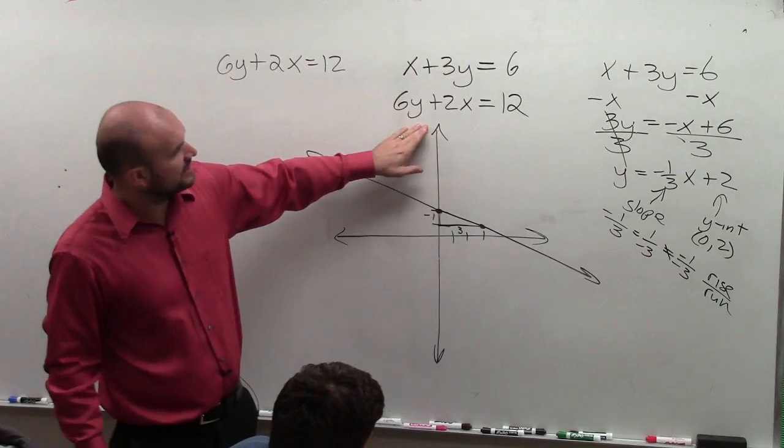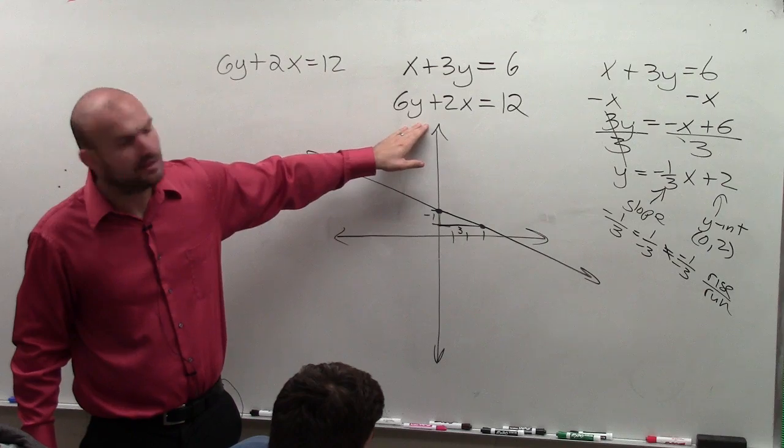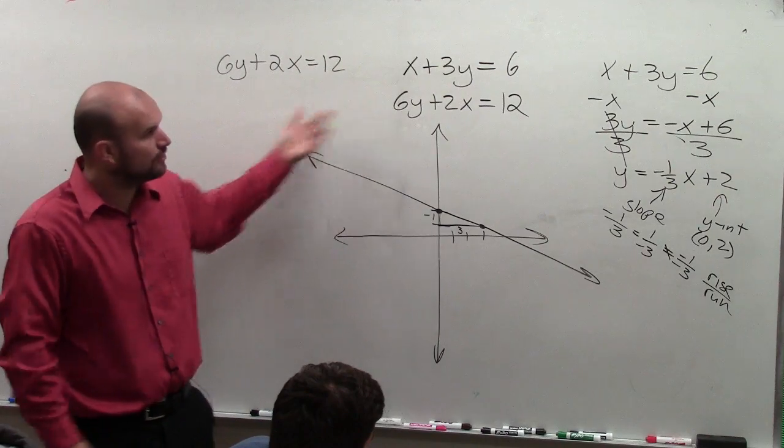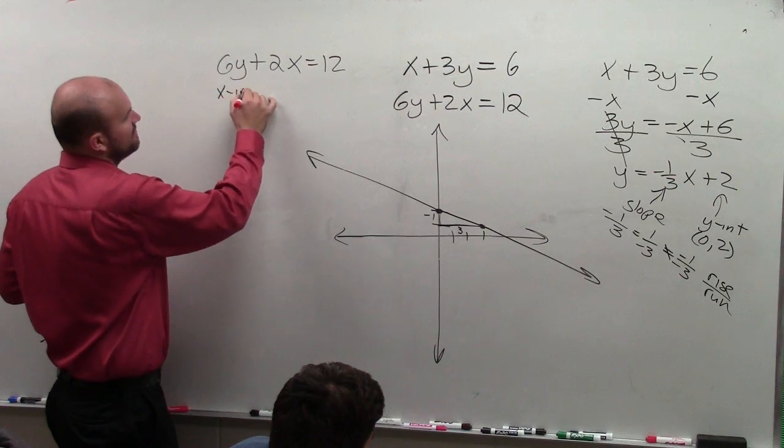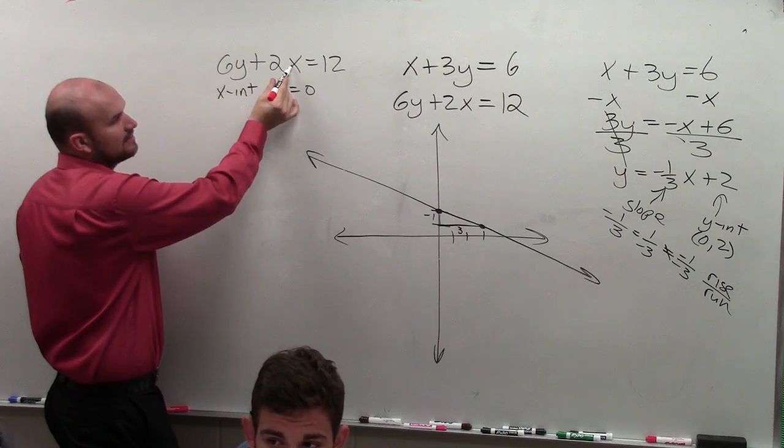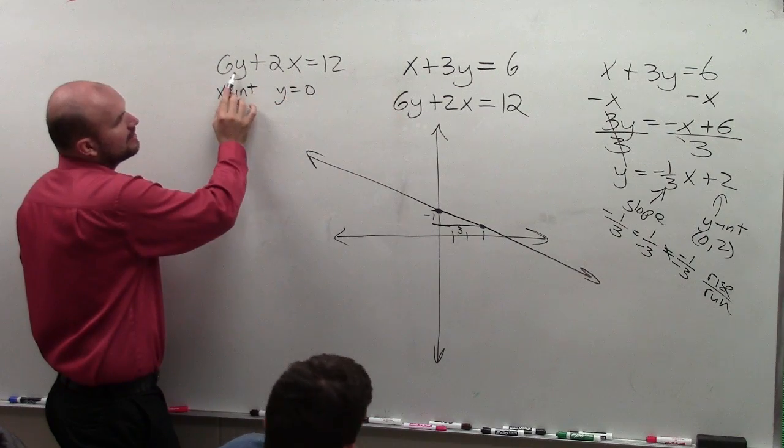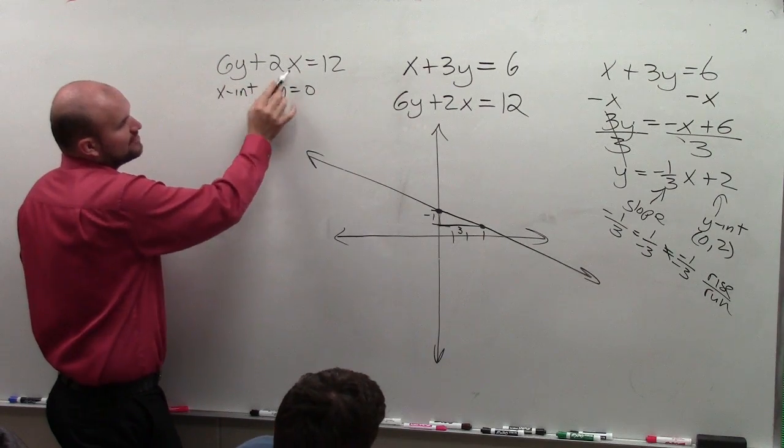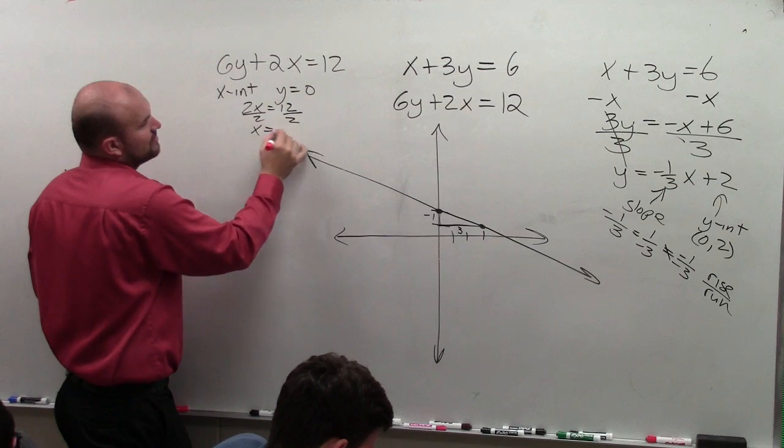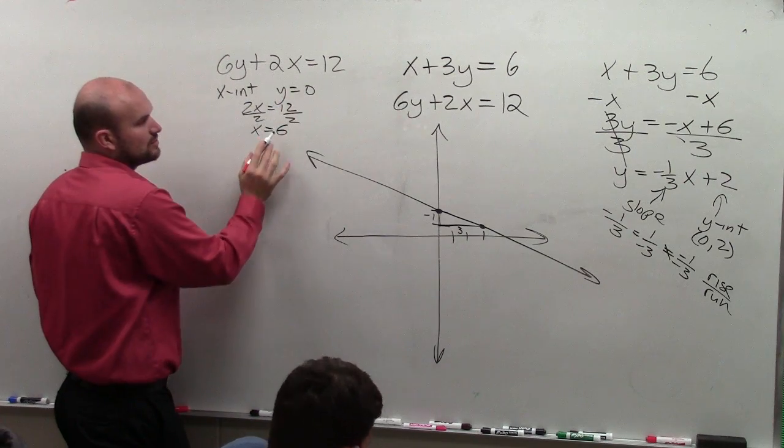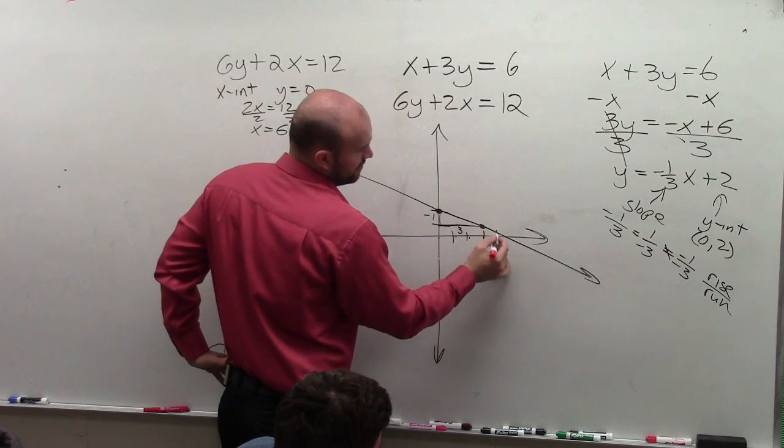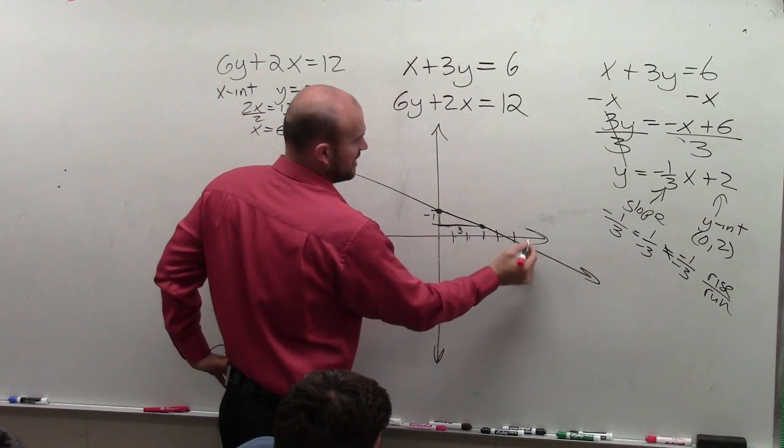Now the next one is I need to go ahead and graph this equation. And when graphing this equation, there's a couple ways you guys do. You guys could use slope-intercept form. You could also use the intercept form. If you guys remember to find the intercept form, you plug 0 in for y to find the x-intercept. So if I put 0 in for y, then I have that become 0, and I have 2x. So then I'd have 2x equals 12. Divide by 2, x equals 6. So therefore, 0 equals y, x equals 6. So I have 0, 6. So I do 1, 2, 3, 4, 5, 6.